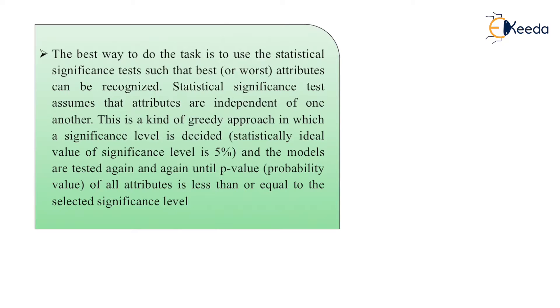Statistical significance test assumes that the attributes are independent of one another. This is a kind of greedy approach in which a significance level is decided, statistically ideal value of significance level is 5%, and the models are tested again and again until the p-value, that is probability value, of all the attributes is less than or equal to the selected significance level.